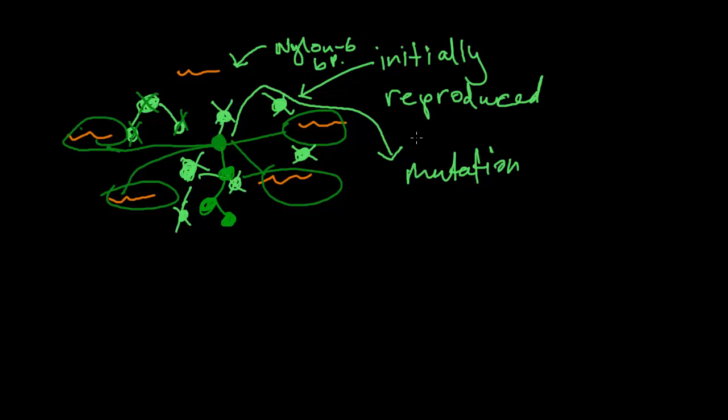So overall, what has happened is that initially, there was a strain of bacteria inside this pond which had normal food that the bacteria could process. After time, the byproducts from the industrialization of the area, which produced nylon-6, contaminated this pond with nylon-6 byproducts. And because of this, this bacterium strain had to get used to, or do anything it possibly could in order to survive and process these byproducts of nylon-6.